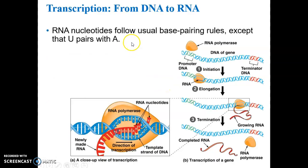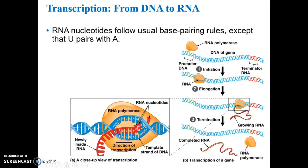The RNA nucleotides follow the usual base pairing rules, except that U pairs with A as opposed to T, because the RNA molecule has U - uracil - as opposed to T, thymine. That's one of the differences between RNA and DNA.